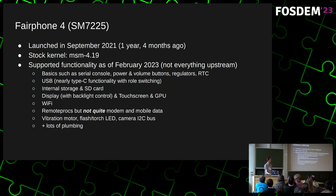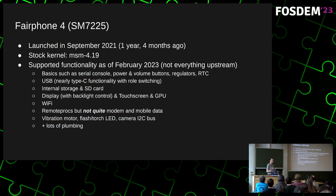It launched about a year and four months ago, running the 4.19 kernel — and we're nearly at 6.2 now. What I have working so far on the 6.1 or 6.2 kernel is all the basics: USB including nearly full USB role switching so you can plug in a keyboard into the device, internal storage on the SD card — UFS and other things — display with backlight control as separate components, touchscreen, GPU, and Wi-Fi.